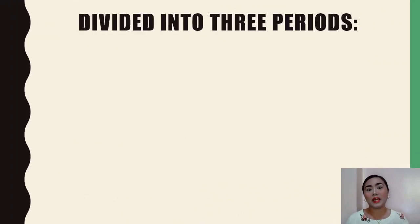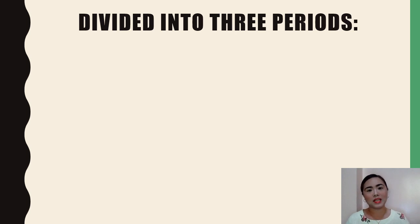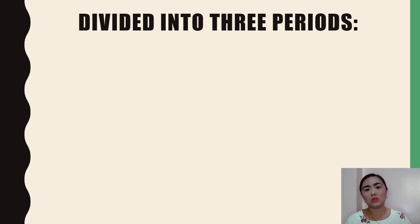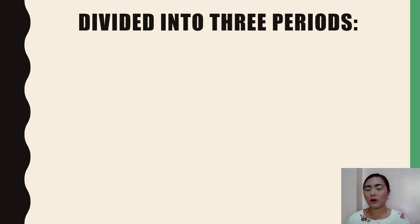When we say prehistoric, it pertains to a time in our history where there is still no writing system to document history. The prehistoric period can be divided into three: the Stone Age, the Bronze Age, and the Iron Age.